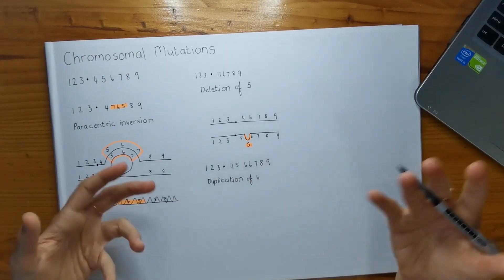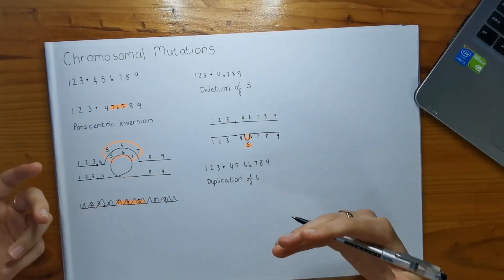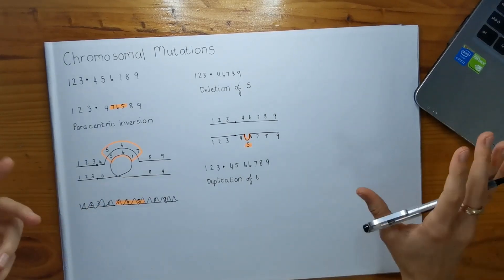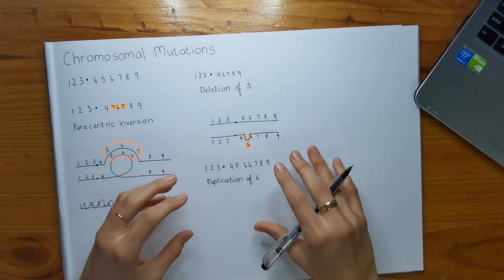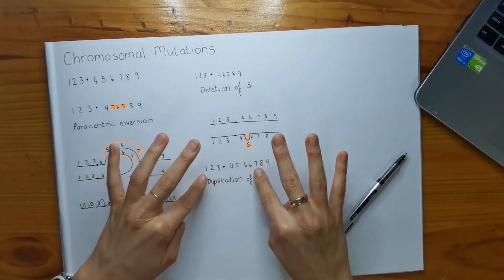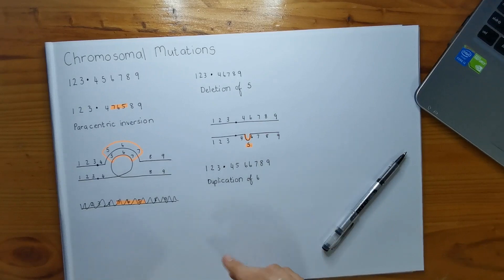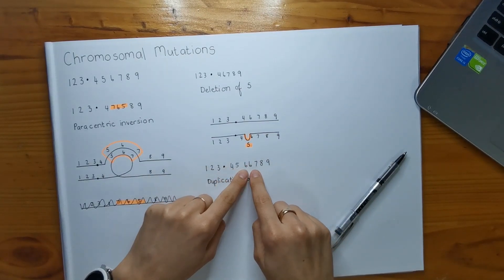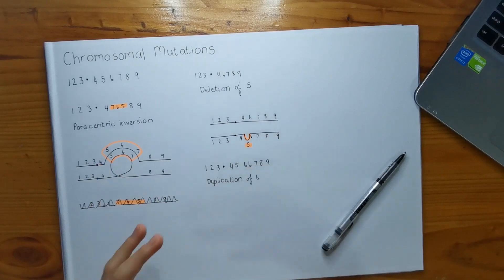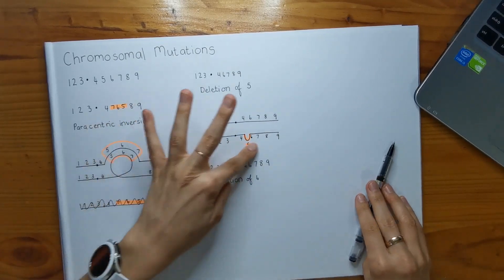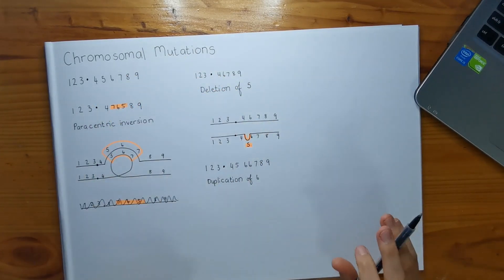You have to be quite specific in your answers, because if you just say it's a deletion or duplication they'll question whether you know what you're talking about. Because there's an extra part on this abnormal chromosome, the bubble is going to be on the abnormal chromosome and not on the normal chromosome, like we had in the deletion section of the question.